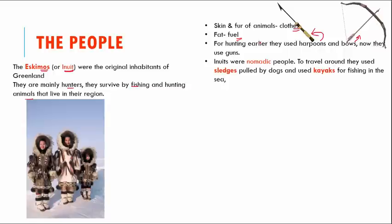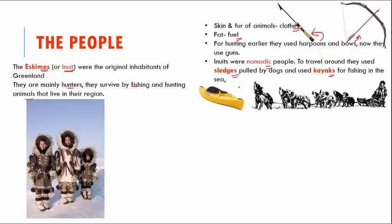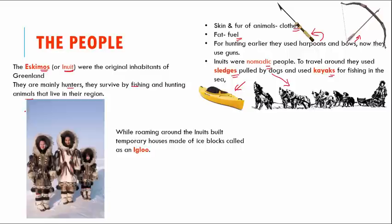Inuits are nomadic people, meaning they keep traveling throughout the year from one place to another without a fixed home. To travel, they generally use sleighs pulled by dogs as well as kayaks to move around in water. While roaming around, they can't keep building proper houses everywhere, so these Inuits used to build temporary houses made up of ice blocks — these are called igloos.